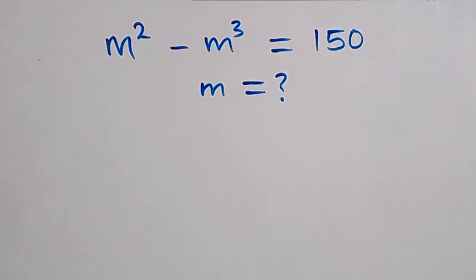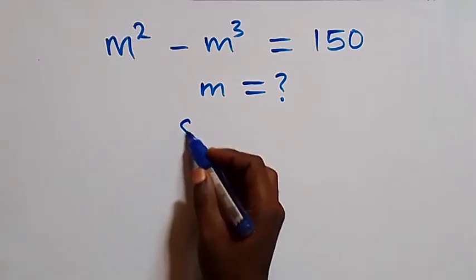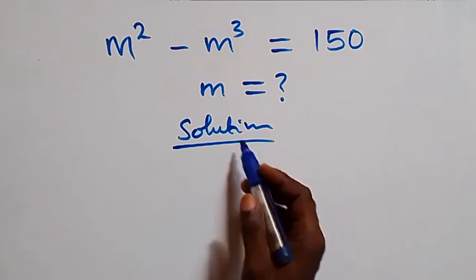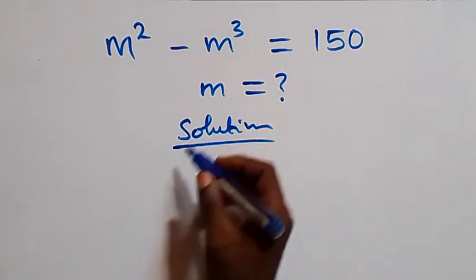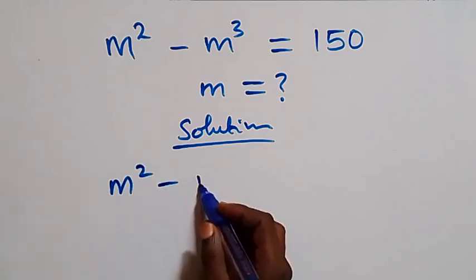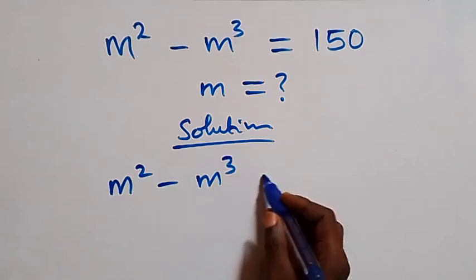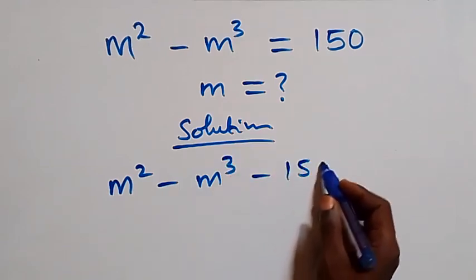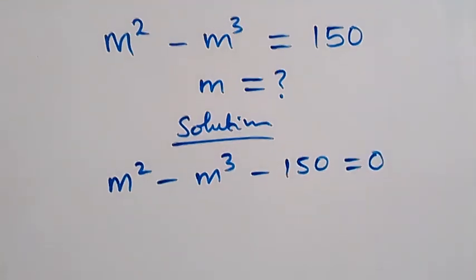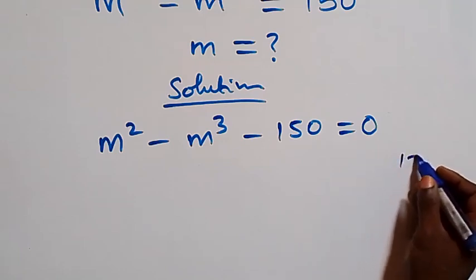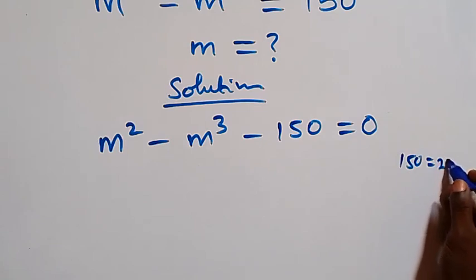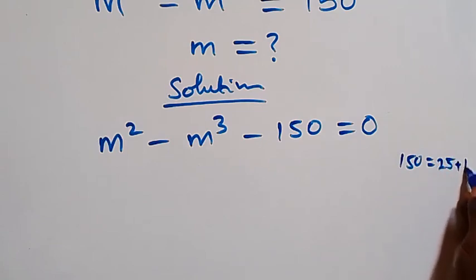Hello, you are welcome. How to solve this nice algebra problem. From what we have here, let's take 150 to the left hand side, and this becomes m squared minus m cubed minus 150 equals zero. From here, we can write 150 as 25 plus 125.